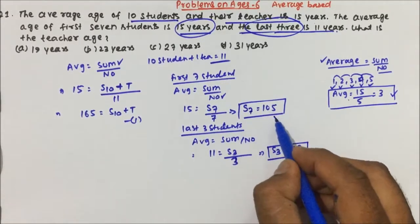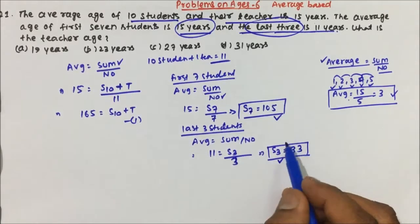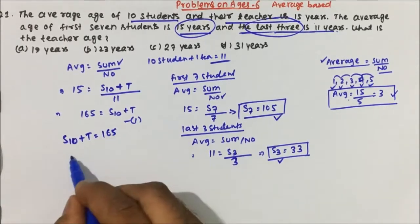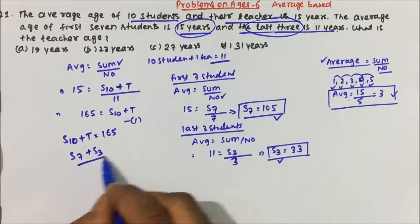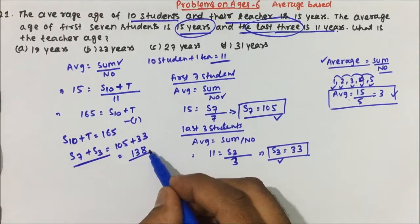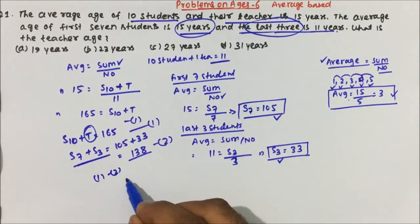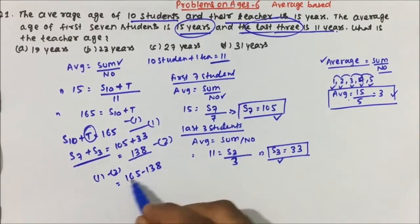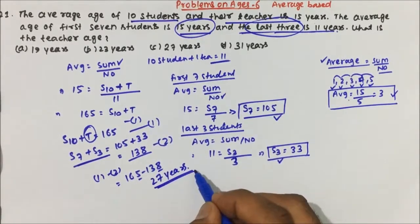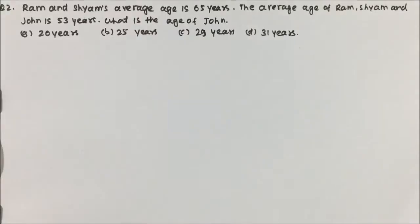The sum of the first 7 students is 105 and the sum of the last 3 students is 33, so the sum of all 10 students = 105 + 33 = 138. The sum of all 11 (students + teacher) is 165. Subtracting: 165 − 138 = 27. So the teacher's age is 27 years, and option C is the correct answer.